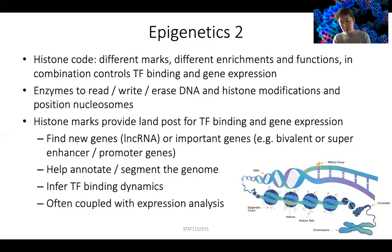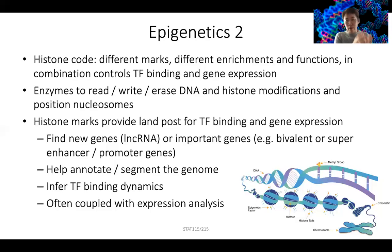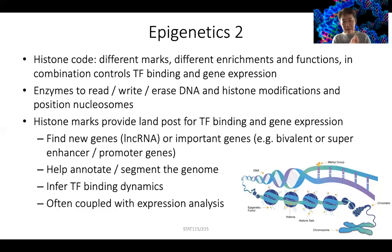We can use histone mark ChIP-seq to help annotate the genome using hidden Markov models — annotating regions as enhancers, promoters, transcription factor binding sites, exons, introns, strong or weak enhancers, and so on. We can also use inferred transcription factor binding dynamics: in cells where you don't know the transcription factor of interest, you can do differential histone marks, look at dynamic mark locations, and figure out what transcription factors are enriched there by motif or TF binding analysis. Histone mark profiles are also coupled with gene expression analysis. Epigenetics should always be investigated in the context of gene expression or gene regulation — looking at epigenetic changes without gene expression differences has very little value.